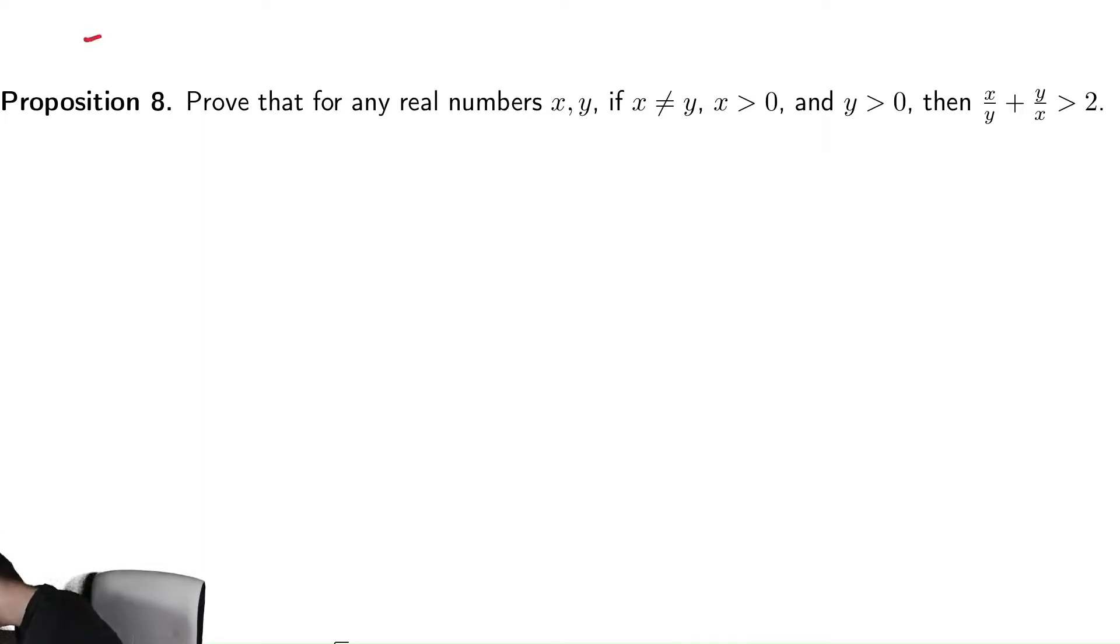So let's write down what the negation of that statement is. Remember that not p implies q is p and not q. So the opposite of this statement is that x doesn't equal y, x greater than zero, y greater than zero, and that that inequality is false.